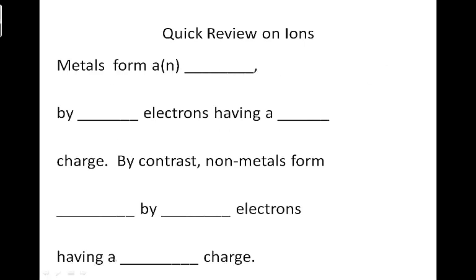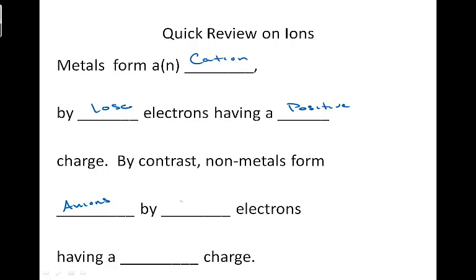Quick review of ions. A metal forms a cation by losing electrons, resulting in a positive charge — remember, cats are positive. Non-metals tend to form anions by gaining electrons, and therefore they have a negative charge.